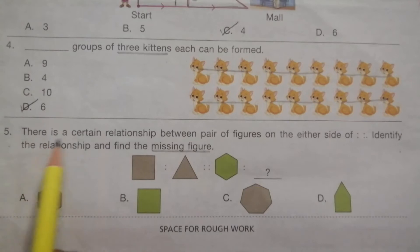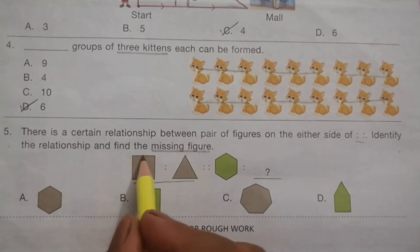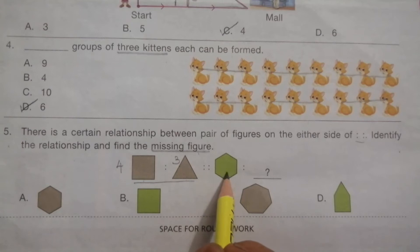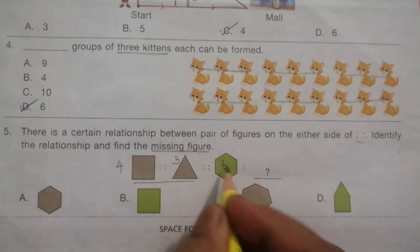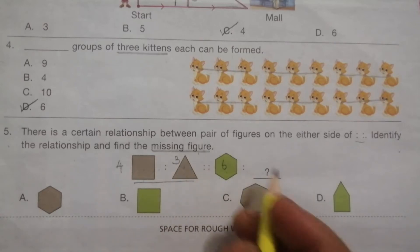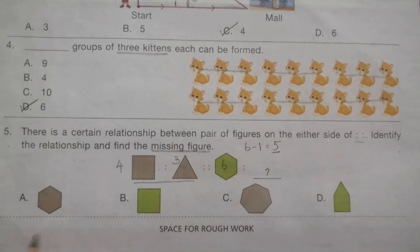Problem 5: There is a certain relationship between pair of figures on either side of proportion. Identify the relationship and find the missing figure. This figure has four sides, it's a square. This triangle has three sides. This hexagon has six sides. If we analyze: 4 minus 1 is 3. So to get this figure, 6 minus 1 equals 5. The figure should have 5 sides. This one has 5 sides: pentagon. So the answer is D.